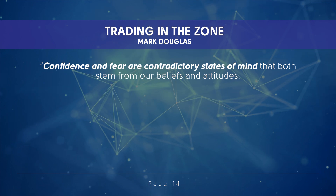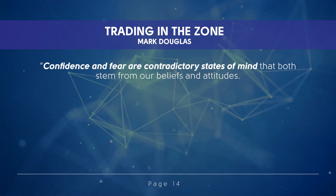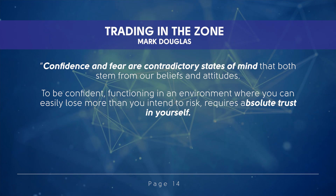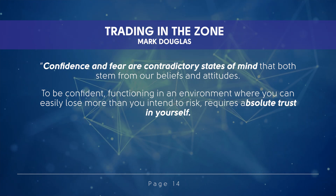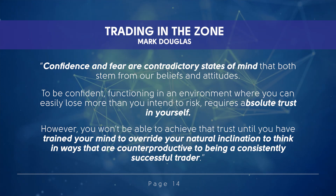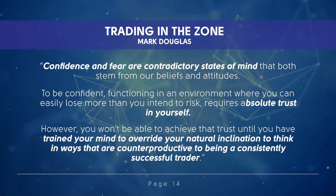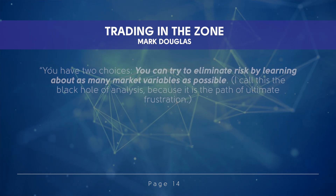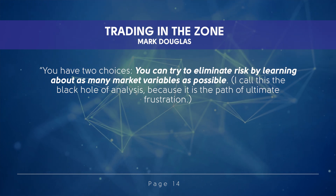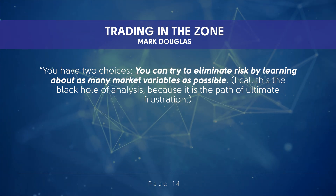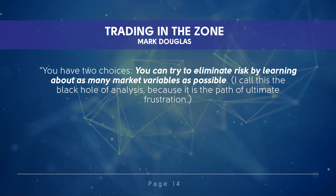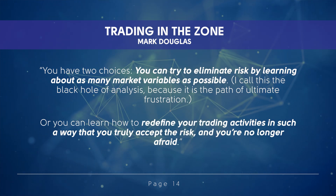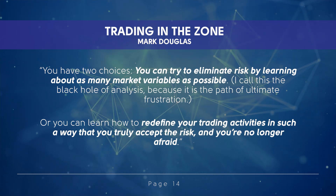On page 14, he goes on to talk about the trader's duality — confidence versus fear. He says confidence and fear are contradictory states of mind that both stem from our beliefs and our attitudes. To be confident, functioning in an environment where you can easily lose more than you intend to risk, requires absolute trust in yourself. However, you won't be able to achieve that trust until you've trained your mind to override your natural inclination to think in ways that are counterproductive to being a consistently successful trader. You really have two choices: you can try to eliminate risk by learning about as many market variables as possible — what he calls the black hole of analysis, a path to ultimate frustration — or you can learn how to redefine your trading activities in such a way that you truly accept the risk and you're no longer afraid.